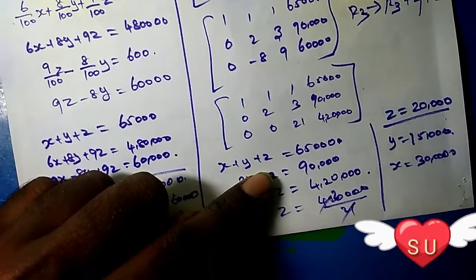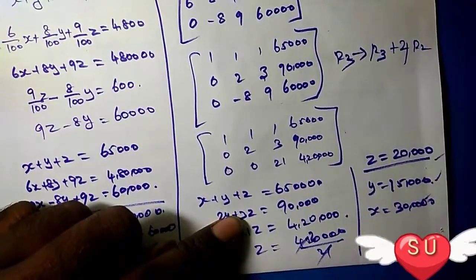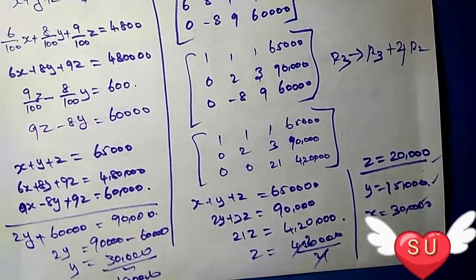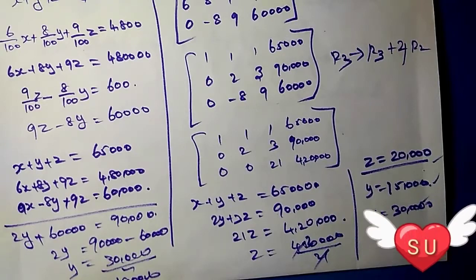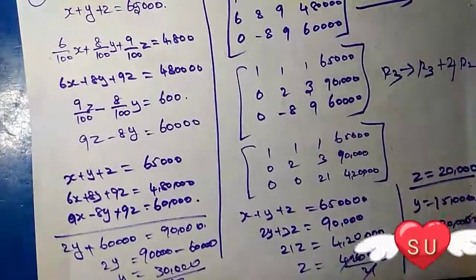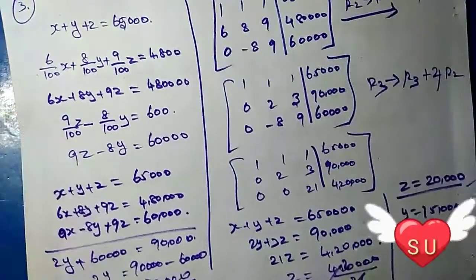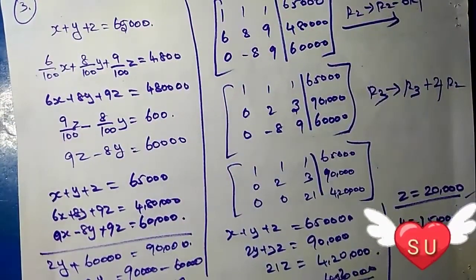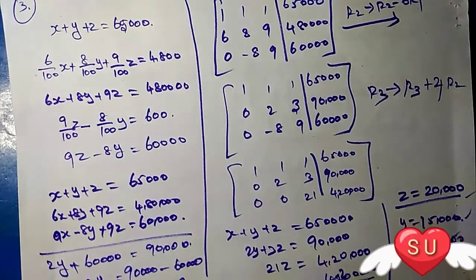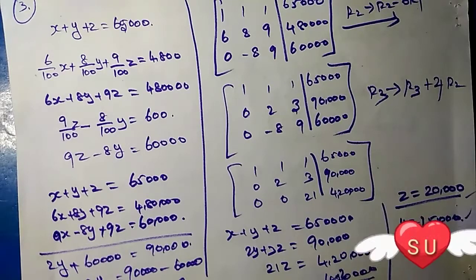The final answer is X equals 30,000, Y equals 15,000, Z equals 20,000. So the answer is very easy using the elimination method. Thank you friends, please like and subscribe.